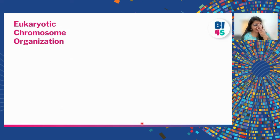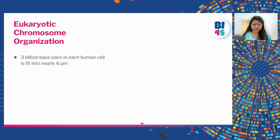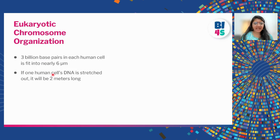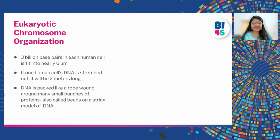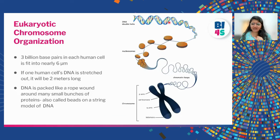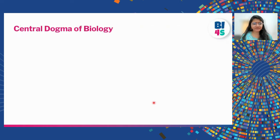How does all of this pack into a small cell we can't even see with our eyes? In a human cell, three billion bases must fit inside six micrometers. If you stretched out the DNA of a human cell, it would be almost two meters long. This is done through something called the beads-on-string model: DNA is wound around proteins, and those proteins with the DNA are bound and compacted further and further until they form a chromosome. The 23 pairs of chromosomes are then packed entirely into the nucleus.